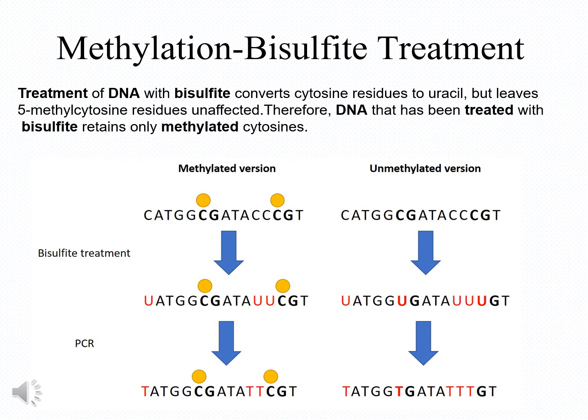The principle of bisulfite sequencing relies on the fact that if you treat DNA with bisulfite, this treatment converts cytosine to uracil but leaves methylated cytosine unaffected. Therefore, the DNA treated with bisulfite retains only methylated cytosine. By using sequencing before and after bisulfite treatment, you can identify the origin of the DNA.